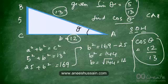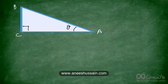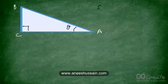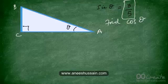Now I want you to solve this question: in triangle ABC, sine of theta equals 3 over 5. Find the value of cos theta. Go ahead and pause this video right now to find the answer, then replay it to see whether you got it right.